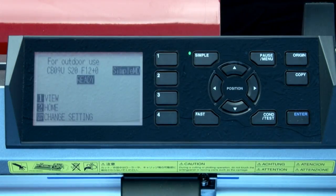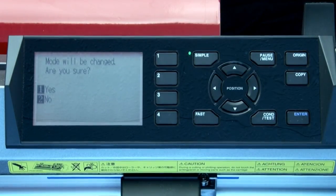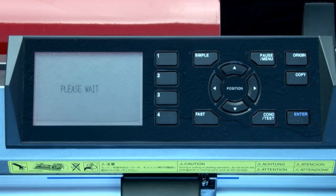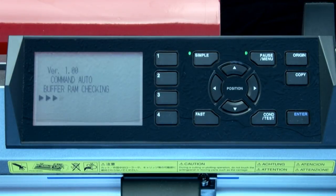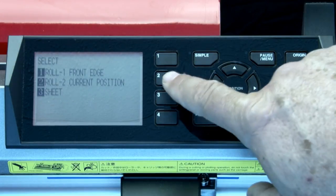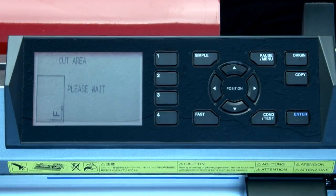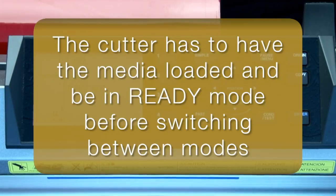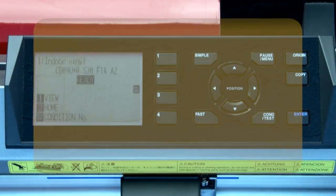To switch back, press the simple button again. Press the one key for yes, and then initialize the cutter by pressing roll two. As a note, the plotter has to have media loaded and be in ready mode before switching to simple or normal modes.